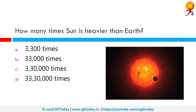How many times is the sun heavier than the Earth? The sun is 13,91,000 km across, which is about 109 times the diameter of Earth. The sun weighs about 33,30,000 times the weight of the Earth.